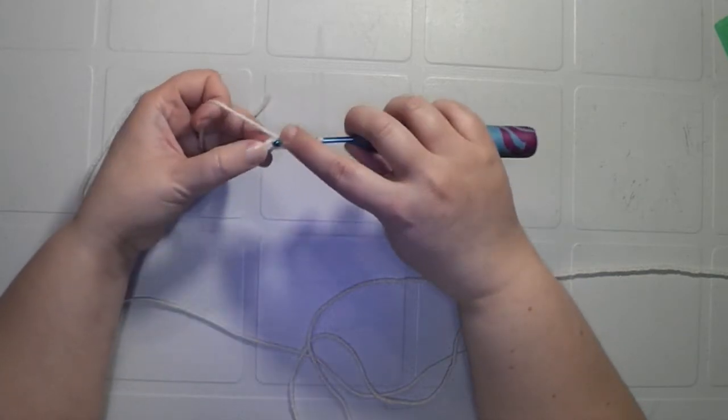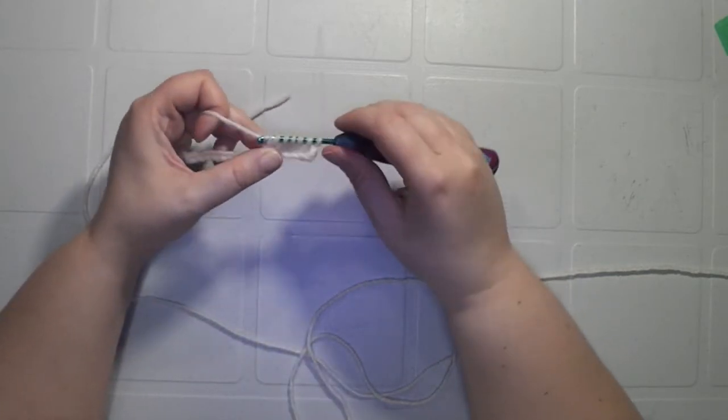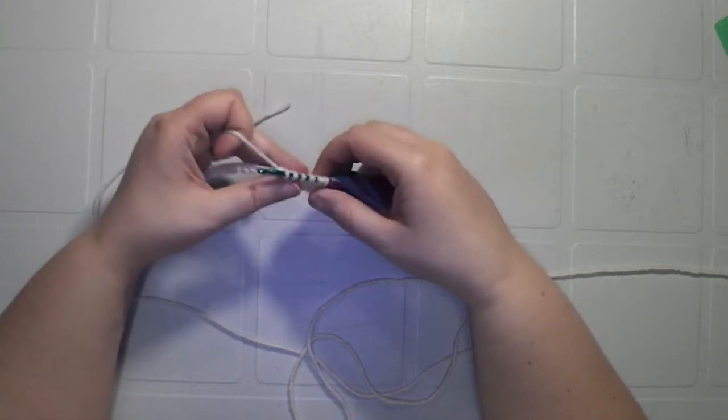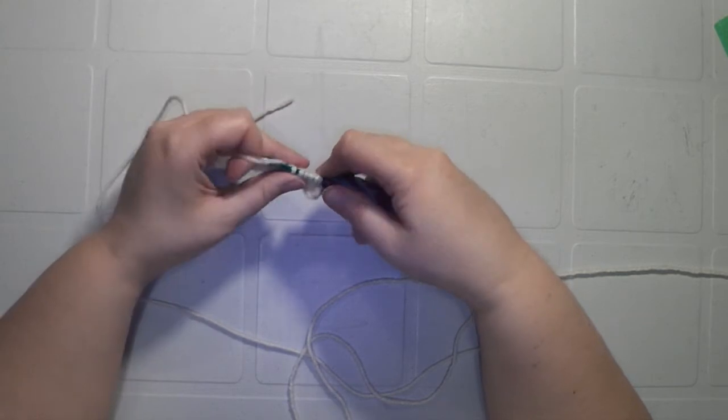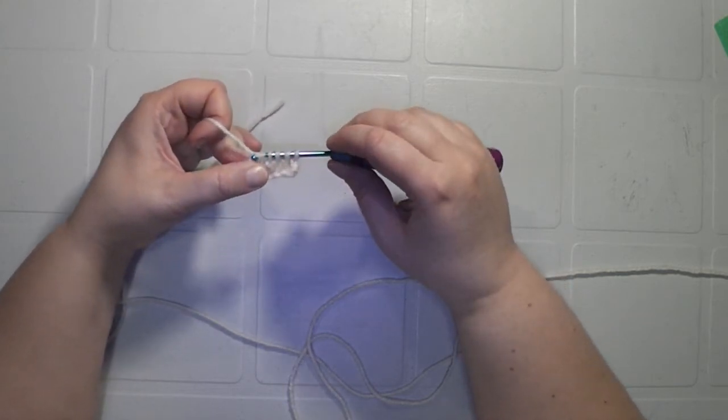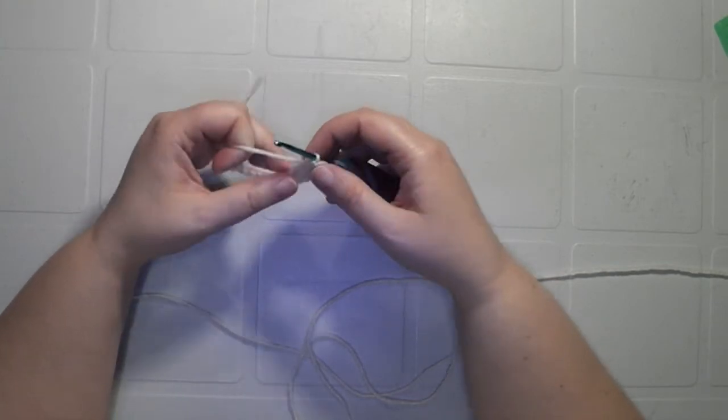So after the third stitch, we have four on our hook. So the fifth one, go through the next chain, yarn over and pull through, yarn over and pull through the first two stitches on your hook. So now we have five loops. The last one, yarn over, go through the next chain, yarn over, pull through, yarn over and pull through the first two on your hook. So now you should have six loops on your hook. So you want to yarn over and pull through all six of those. Then make it a little bit tight.